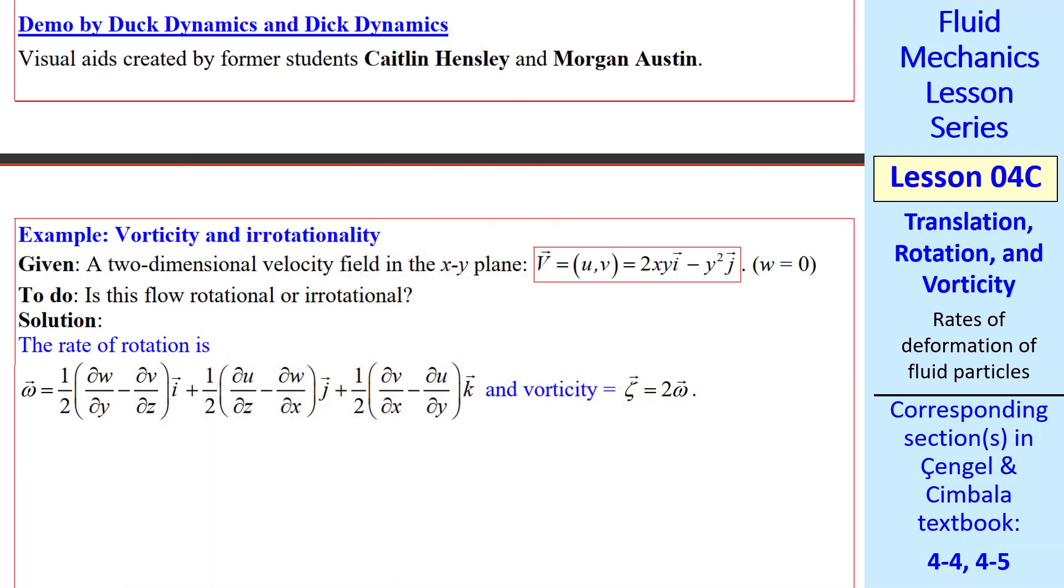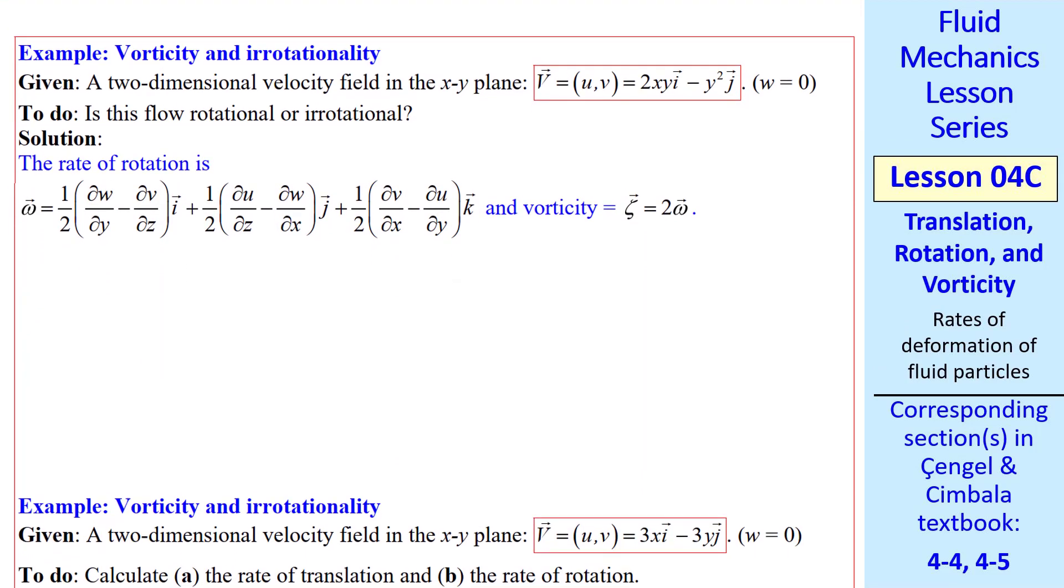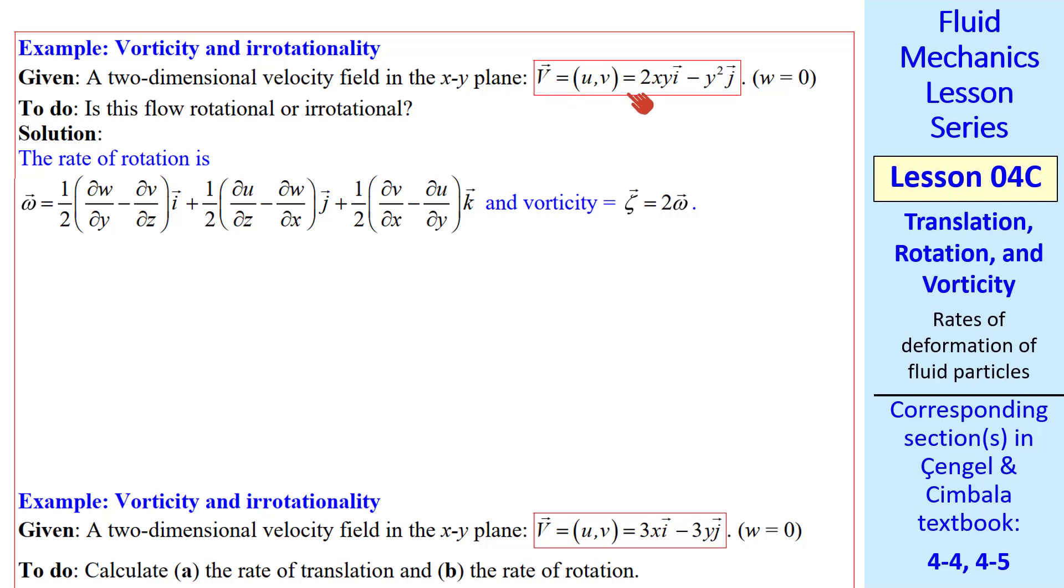Thanks, Duck and Dick. Now let's do an example problem. We're given a two-dimensional velocity field in the XY plane. There's no flow in the Z direction, and there's no time in this equation, so it's also steady. The question is posed, is this flow rotational or irrotational?